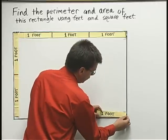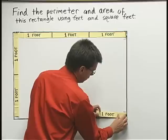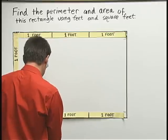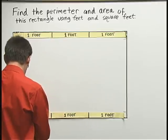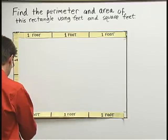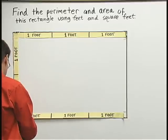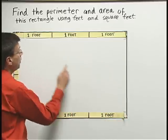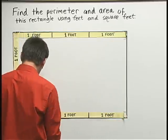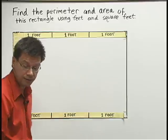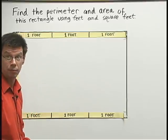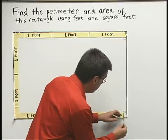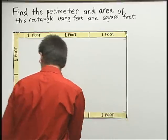Now I'm going to measure the bottom side. There's a foot, second foot, and a third foot. And you'll notice that the number of feet across the top and the number of feet across the bottom are the same — three feet across the top, also three feet across the bottom.